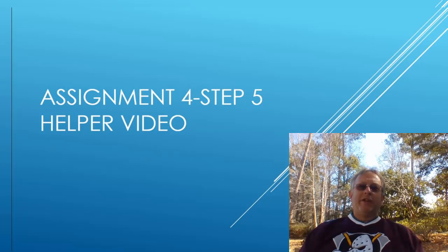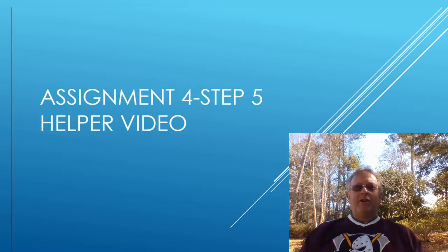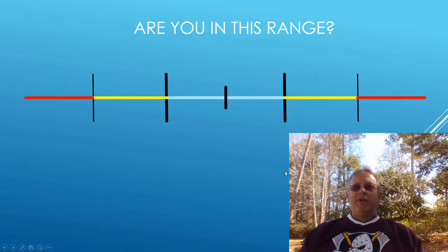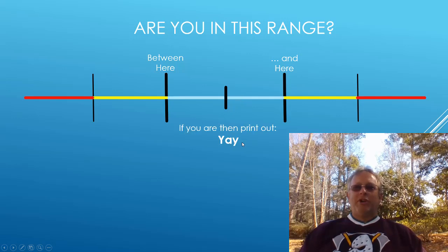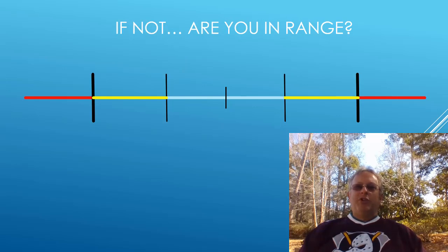Welcome to this helper video for step 5 of assignment 4 — a little bit nasty, so I thought I would give you a helping hand. The purpose of this step is: I'm going to give you a number and a center point, and I'm going to ask you, are you between this point and this point? If you're in this range, I want you to print out the word 'yay.' If you're not in that range, I want you to come over here and say, hey, are you between this point and this point?